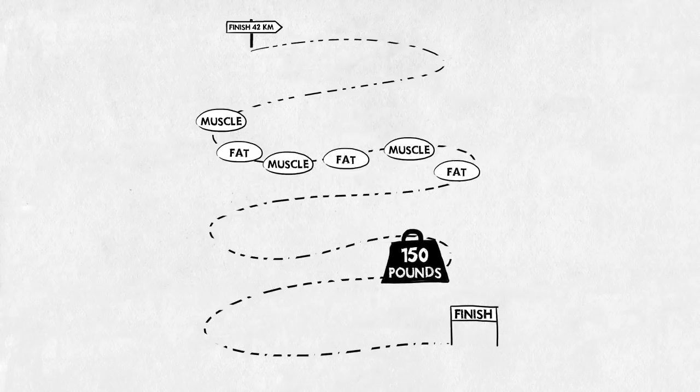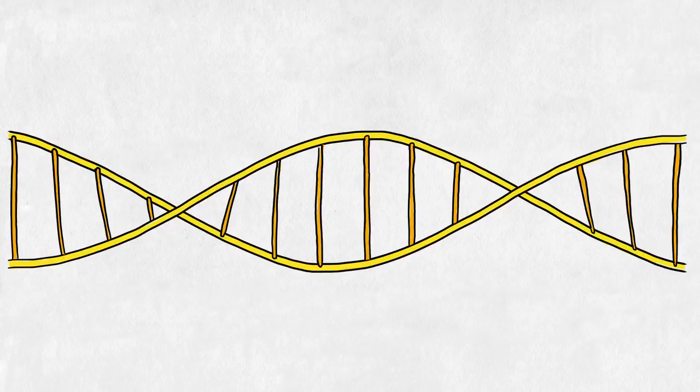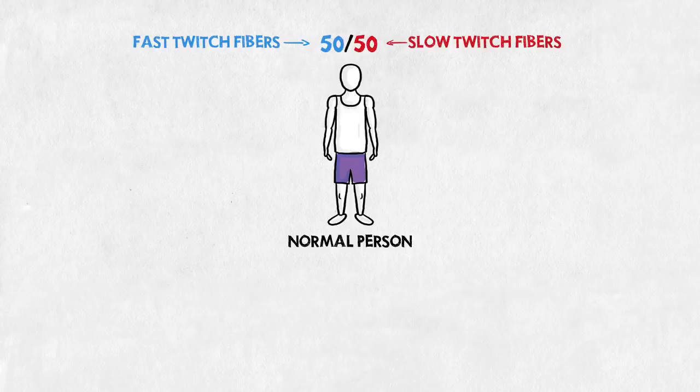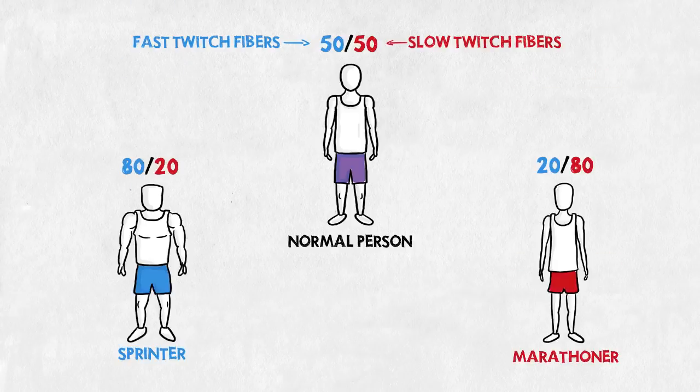That's why he looks so skinny. On top of the difference in training, genetics also play a part. A normal person has about an even amount of fast and slow twitch fibers. But the persons that make it to the top tend to have more of one kind. So even untrained, they wouldn't have the same physical appearance.